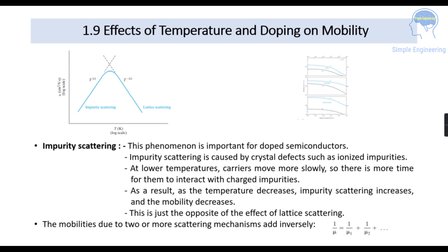Next is impurity scattering. In the figure you can see both impurity scattering and lattice scattering. Impurity scattering applies to doped semiconductors and is caused by crystal defects such as ionized impurities. At low temperature, carriers move more slowly, so there is more time for them to interact with charged impurities. As a result, when temperature decreases, impurity scattering increases and mobility of electrons and holes decreases — the opposite of lattice scattering. The mobility due to two or more scattering mechanisms adds inversely: 1/mu = 1/mu1 + 1/mu2.